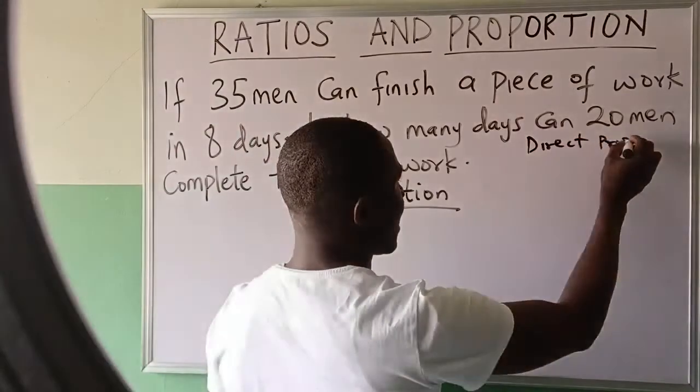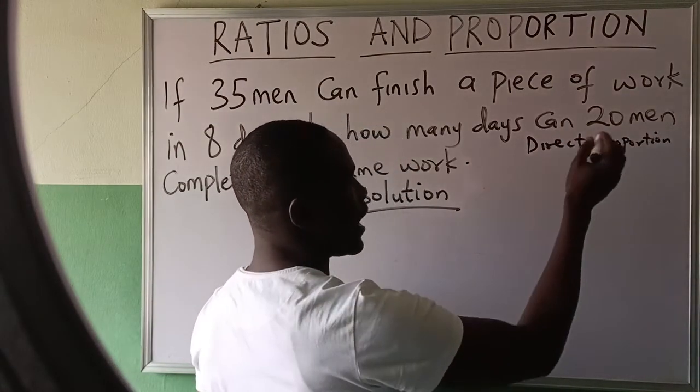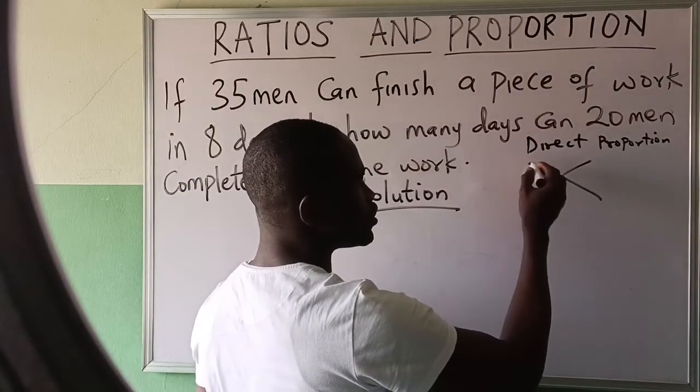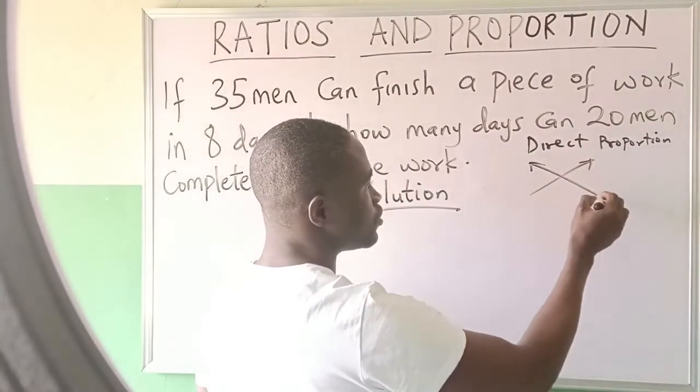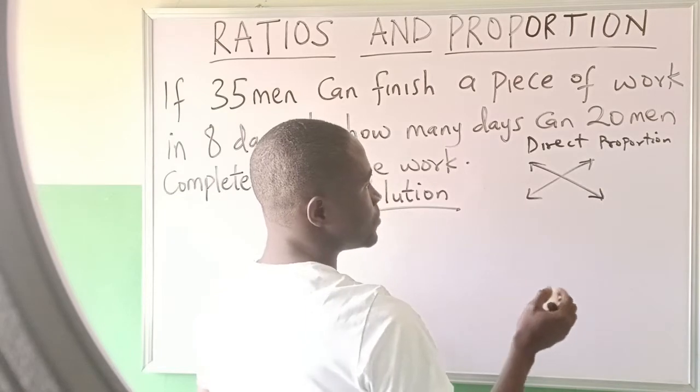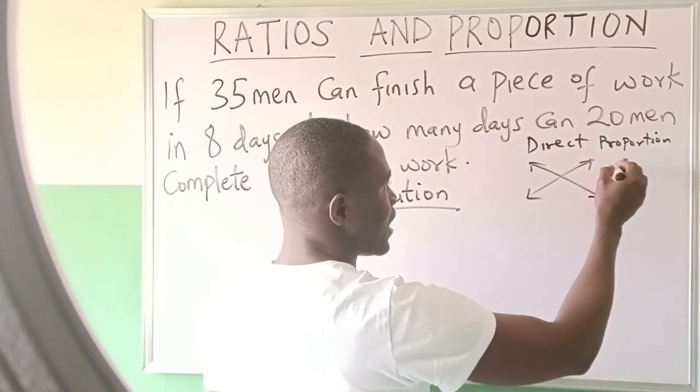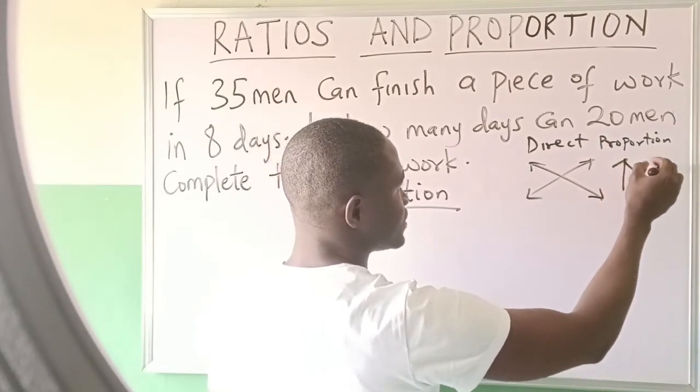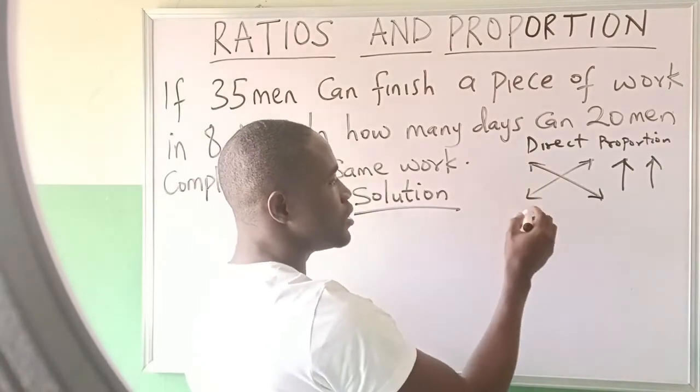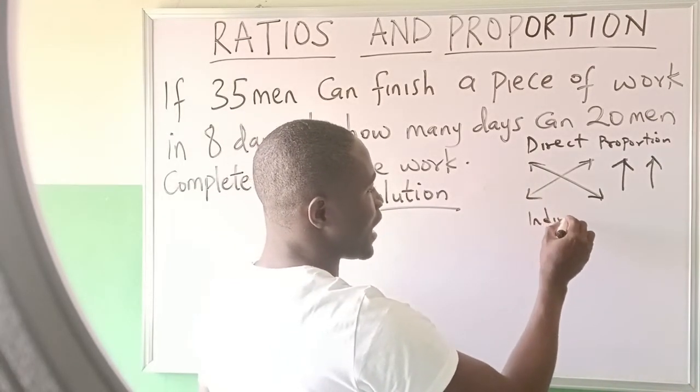I suggest you use the cross-multiply approach to get your answer. That is, the higher the first, the higher the second. But when you are having a direct proportion...